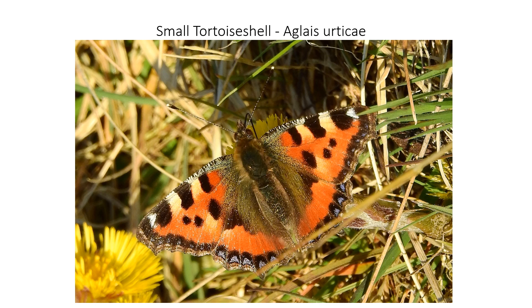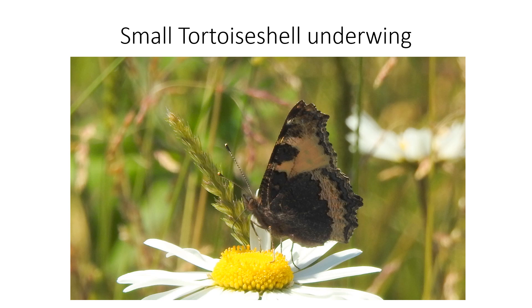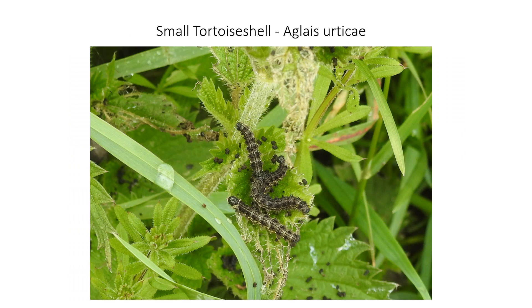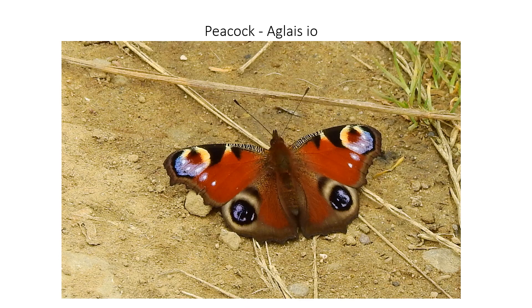We have the small tortoiseshell — another one that shouldn't be too difficult to separate from the others. The species name Urticae refers to the food plant, which is nettle. The underwing has a white bar on the hind wing towards the margin, which is distinctive if you see a butterfly on a flower and you've just got the underwing showing. And here are some caterpillars feeding on nettle.